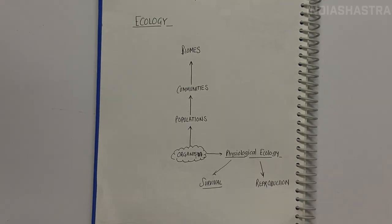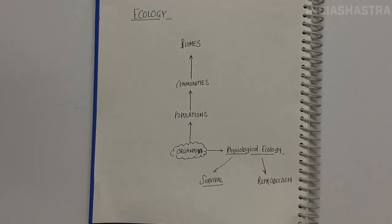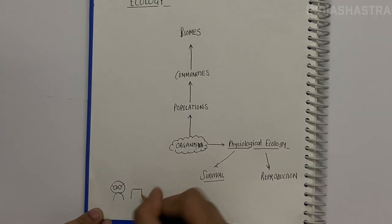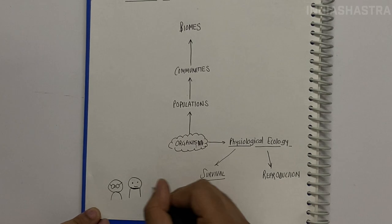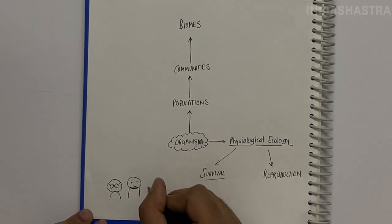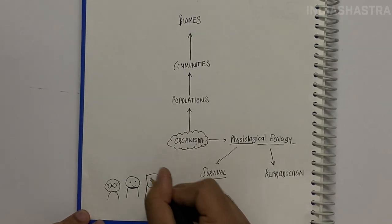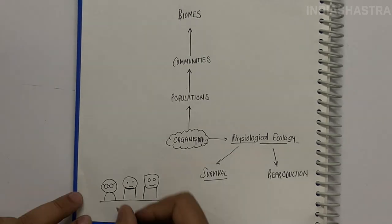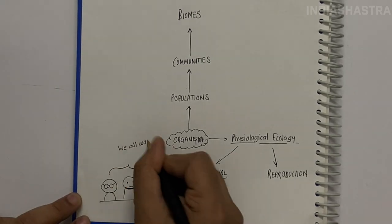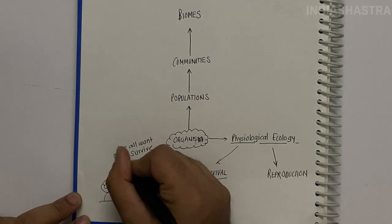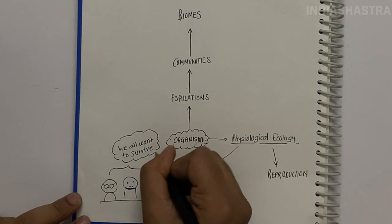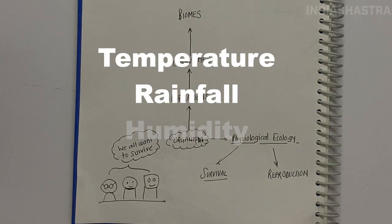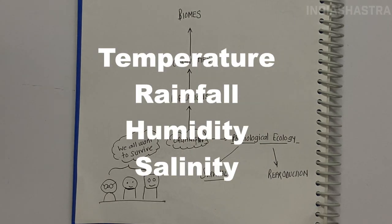Imagine a class where every kind of student is present — studious, multi-talented, sports person — but everyone has to pass to get promoted to the next standard, irrespective of their IQ, background, and interest. Similarly, every organism has to survive irrespective of variations in temperature, rainfall, humidity, salinity, etc.